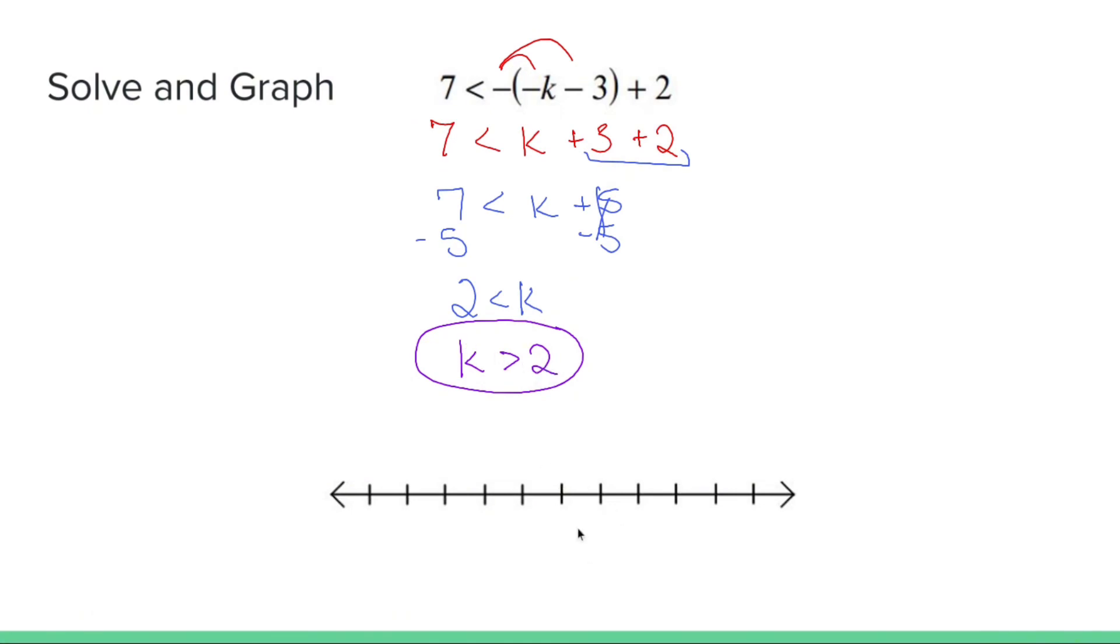So when I graph this on a number line, I put two wherever I want. So this will be three, four, five, six, seven, one, zero, negative one, negative two, negative three, right?